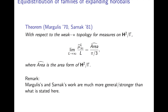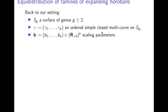Let me remark that Margulis and Sarnak's work is much stronger in general than what I'm saying here — I'm just stating the version that's going to be enough for our motivation. This result says that using these measures to keep track of how horoballs wrap around our surface, we witness equidistribution. Now I want to explain how this equidistribution looks in our case.